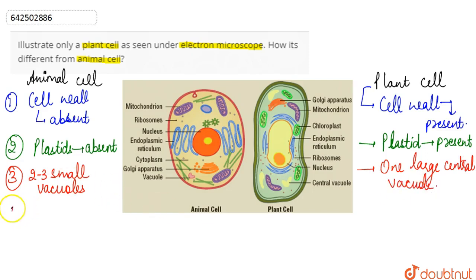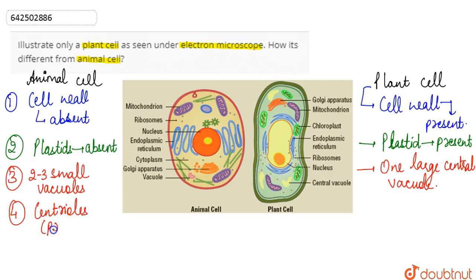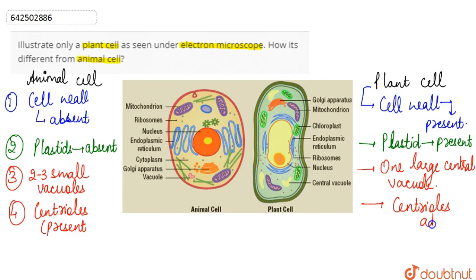The fourth difference is that in animal cell, centrioles are present. Whereas in case of the plant cell, centrioles are absent.